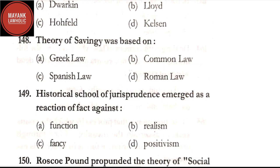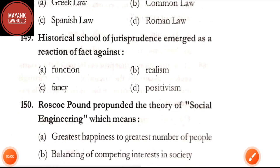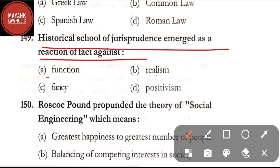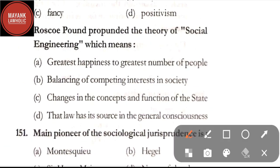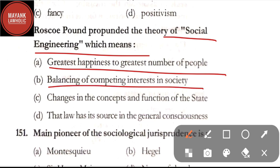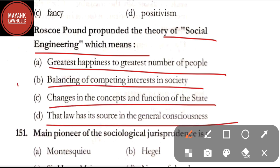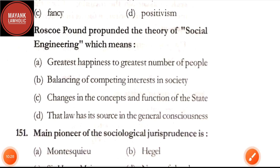Question number 148: theory of Savigny was based on — option A: Greek law; option B: common law; option C: Spanish law; option D: Roman law. The correct answer is option D, Roman law. Question number 149: historical school of jurisprudence emerged as a reaction against — function, realism, fancy, or positivism. The correct answer is option D, positivism. Question number 150: Roscoe Pound propounded the theory of social engineering, which means — balancing of competing interests in society. The correct answer is option B.